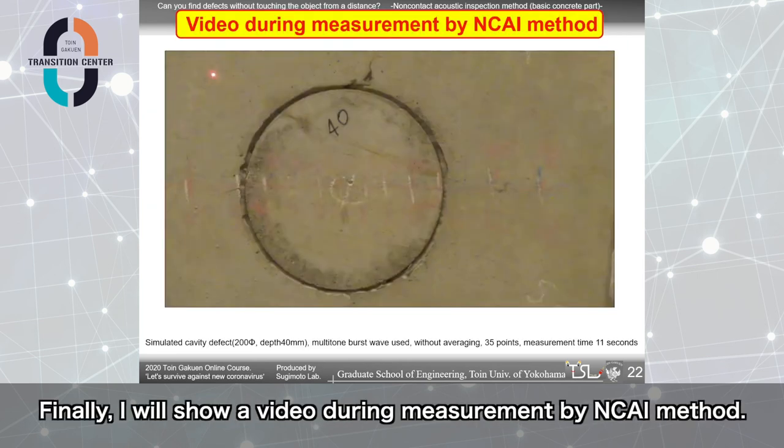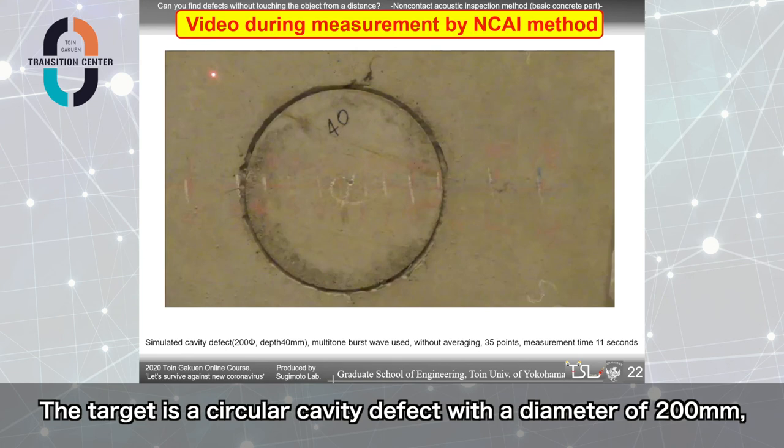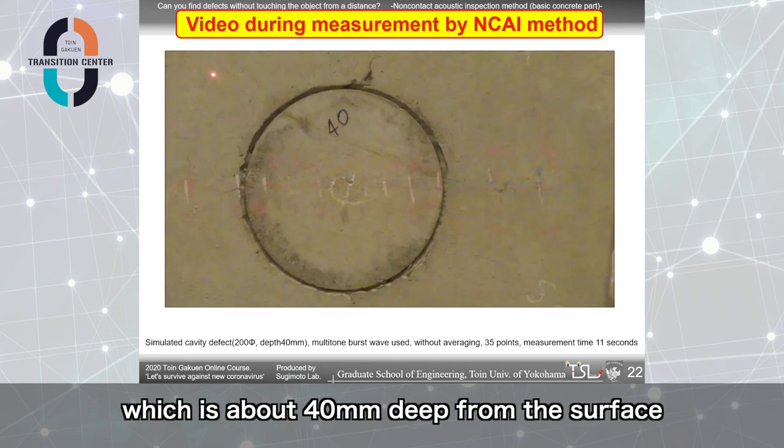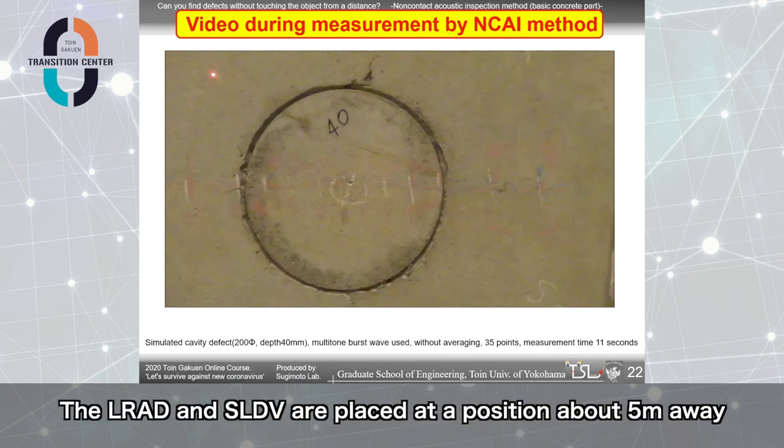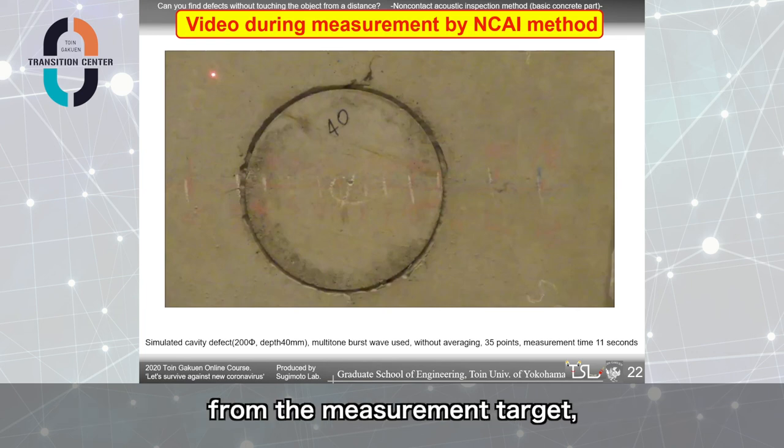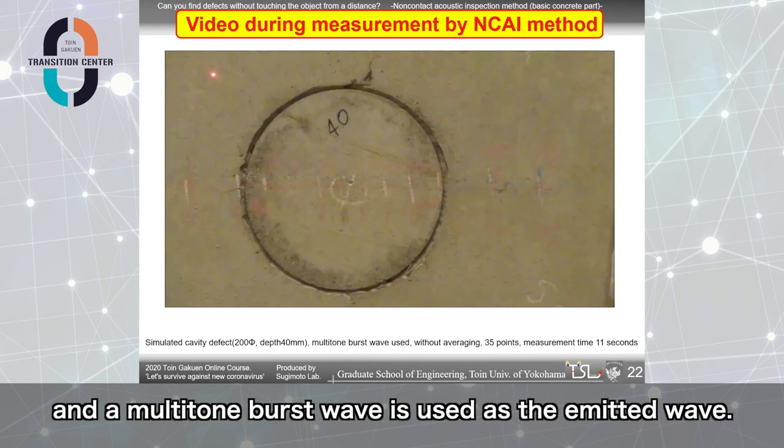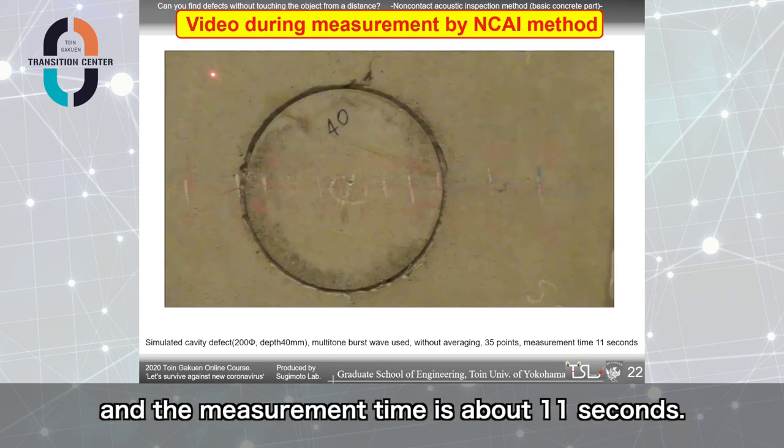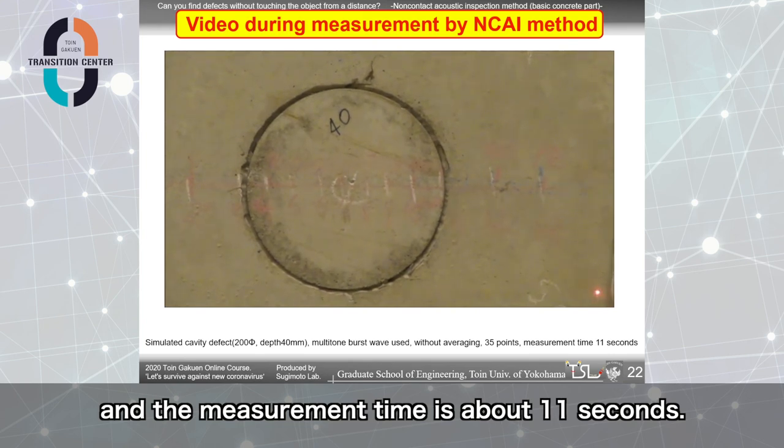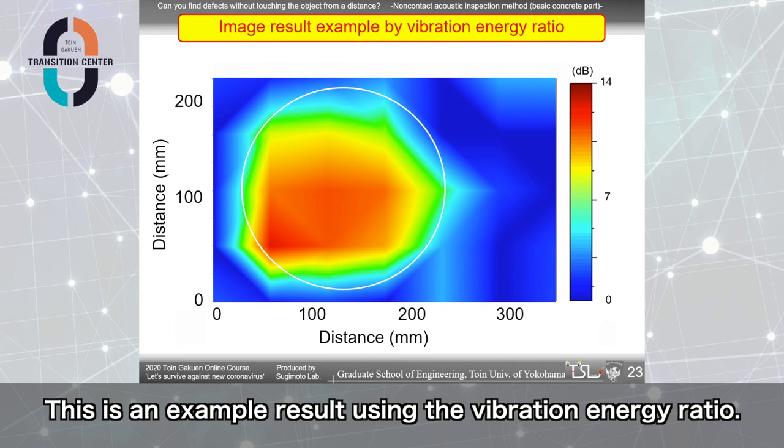Finally, I show a video during measurement by NCAI method. The target is a circular cavity defect with a diameter of 200mm, which is about 40mm deep from the surface of the concrete specimen. LRAD and SLDV are placed at a position about 5m away from the measurement target. And the multi-tone burst wave is used as the emitted wave. There is no average. The number of measurement points is 35. And the measurement time is about 11 seconds.